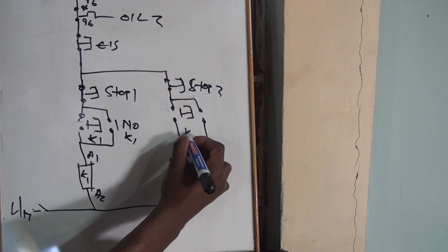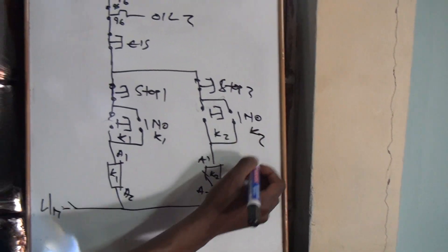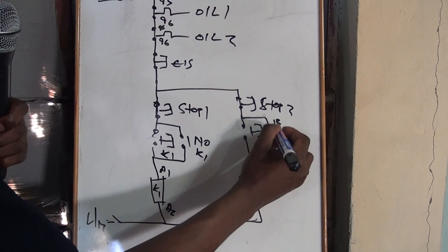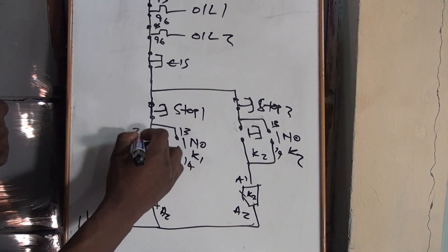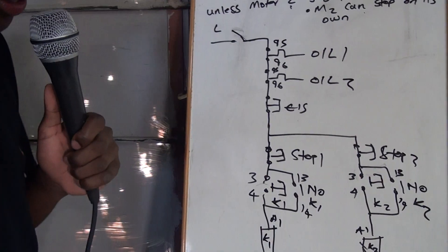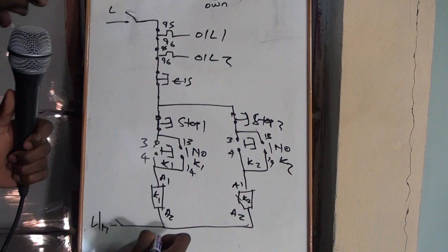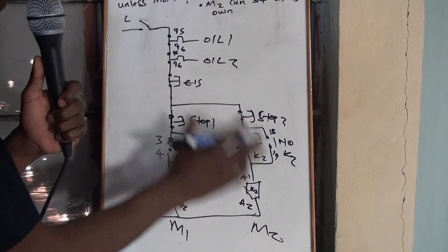K2, normally open of K2, 13, 14, 13, 14, 3, 4, 3, 4, yeah, I think, then here we can see this side is for Motor 1, this side is for Motor 2, so this is your control circuit.